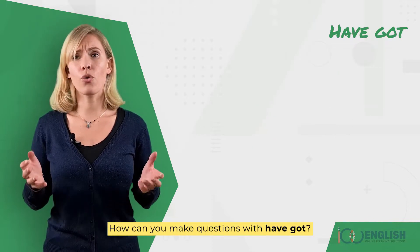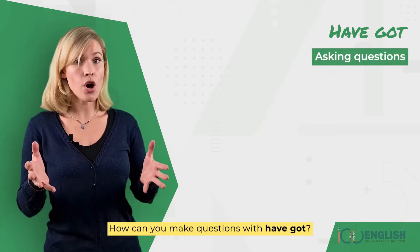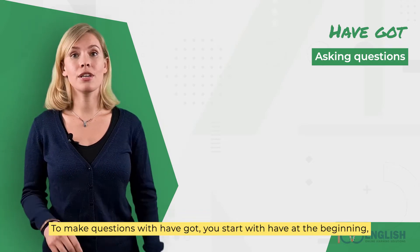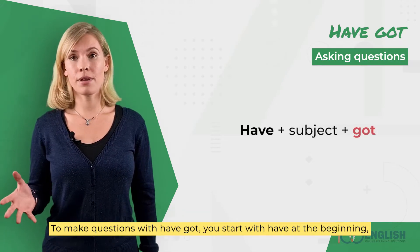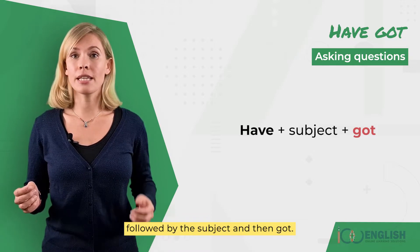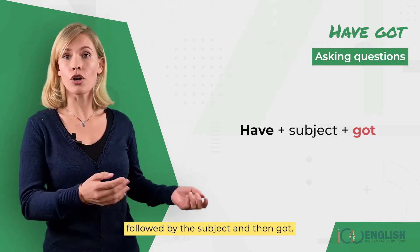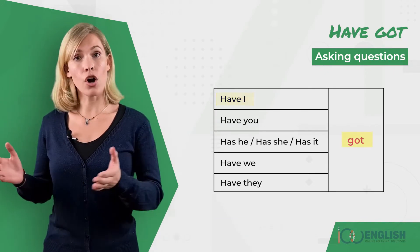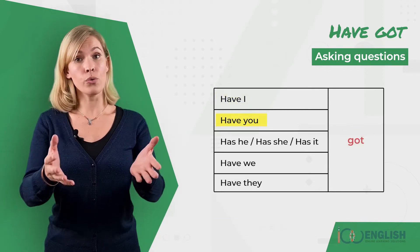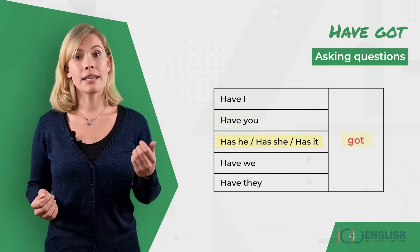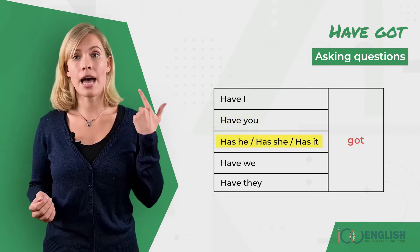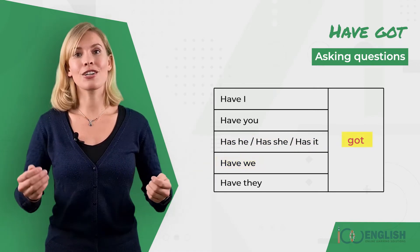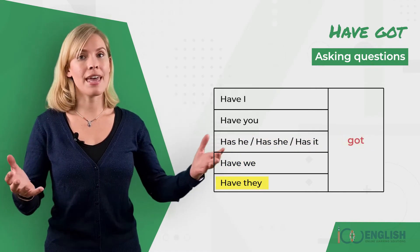How can you make questions with have got? To make questions with have got, you start with have at the beginning, followed by the subject and then got. The forms are: have I got? Have you got? Has he/has she/has it got? Have we got? Have they got?